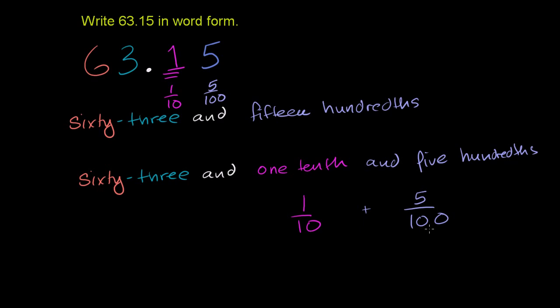Well, you need a common denominator. 100 is divisible by both 10 and 100. So multiply both the numerator and denominator of this character by 10. You get 10 on the top and 100 on the bottom. 1 tenth is the same thing as 10 over 100. 10 hundredths plus 5 hundredths equals 15 over 100. So this piece right here is equal to 15 over 100. And that's why we say 63 and 15 hundredths.